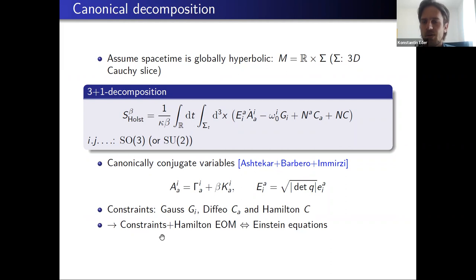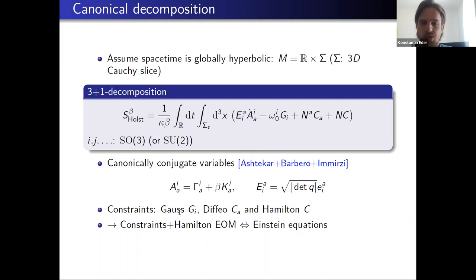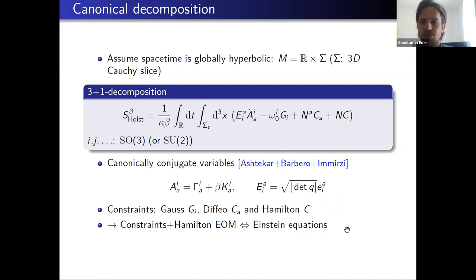In the canonical approach to loop quantum gravity, one starts with a 3+1 decomposition of the action, assuming that spacetime is globally hyperbolic, so it takes the form R times some three-dimensional spacelike slice. This leads to the Ashtekar-Barbero variables, where A is some SU(2) gauge field — also called the Ashtekar-Barbero connection — and its conjugate momentum is called the gravitational electric field, depending on the frame fields. Additionally, one gets certain constraints: the Gauss constraint generating infinitesimal gauge transformations, the diffeomorphism constraint generating spatial diffeomorphisms, and the Hamiltonian constraint governing the dynamics. By imposing the constraints and studying the Hamiltonian equations of motion, this leads back to the Einstein field equations.